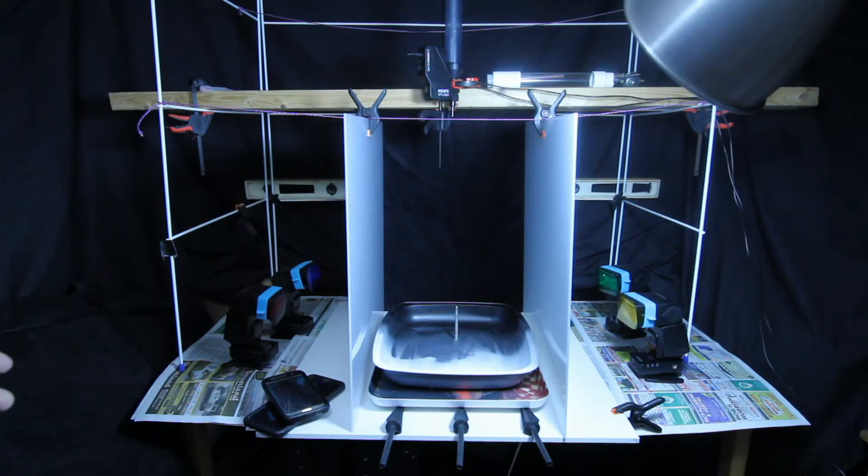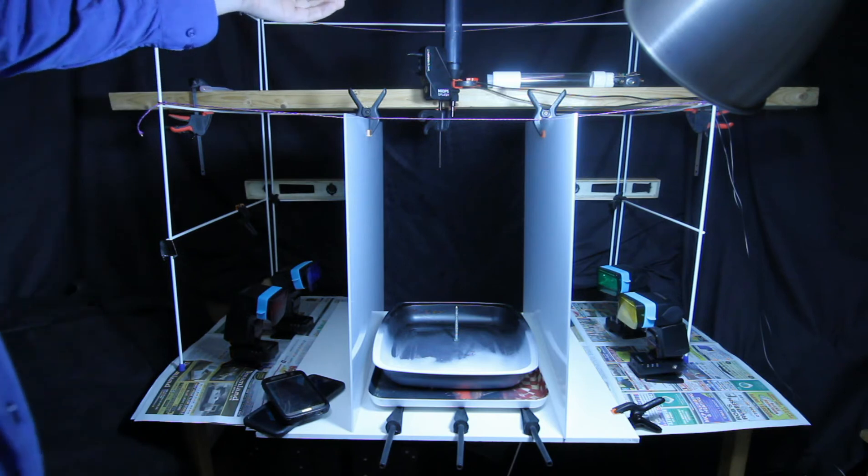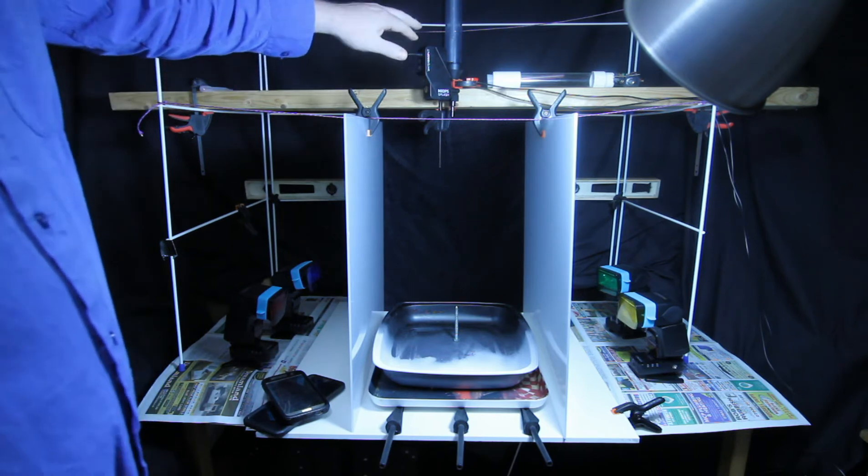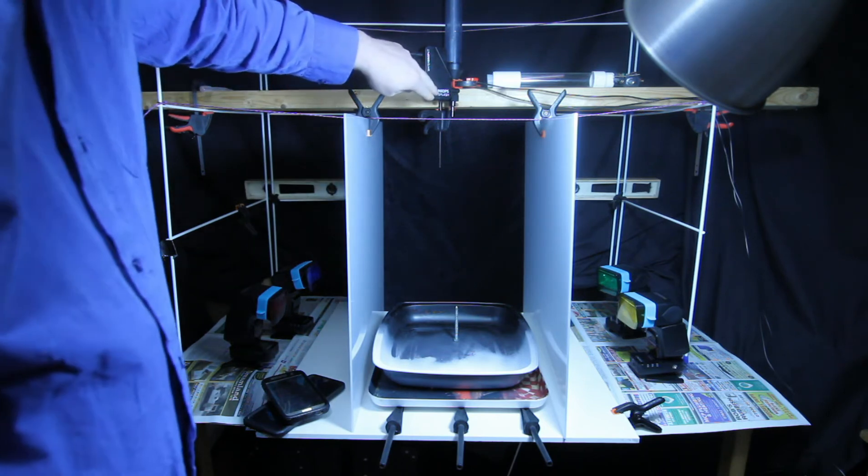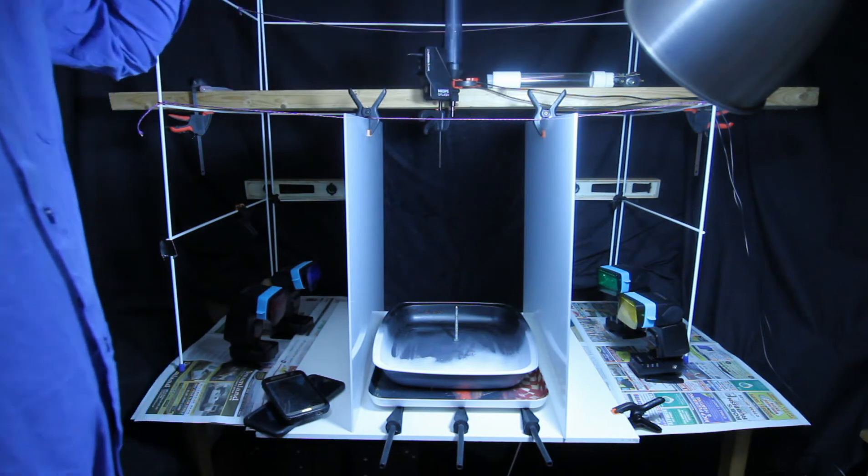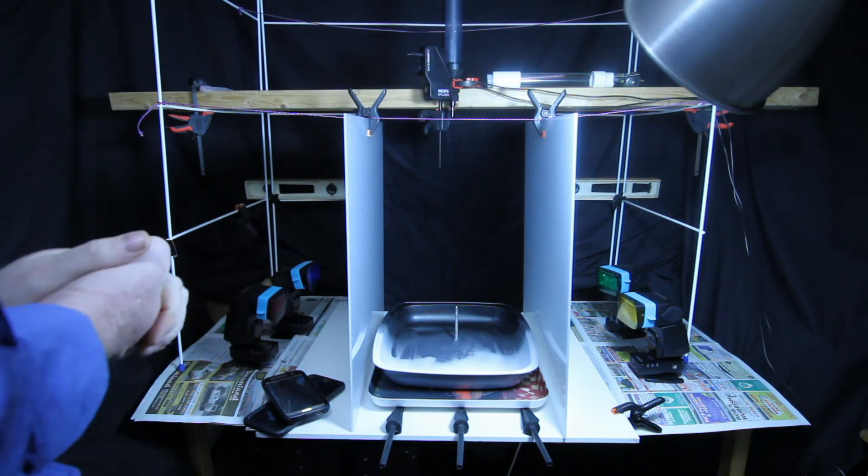As you can see this is my current setup for water drop collisions. I'll start from the top and work my way down. On the top I have of course the water drop kit. Currently I've got the Myops one set up but I also have the Pluto one. Not much difference between the two.